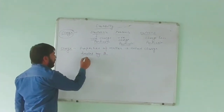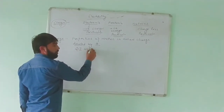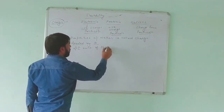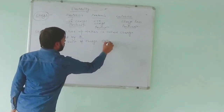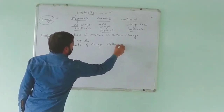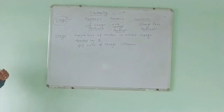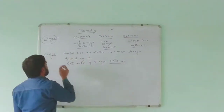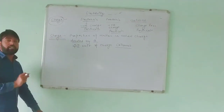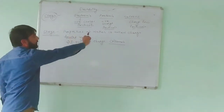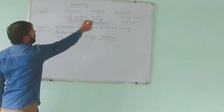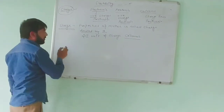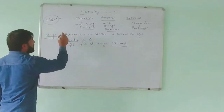The unit of charge is the Coulomb. If there is charge, it is measured in Coulombs. If there is no charge, that is neutral.